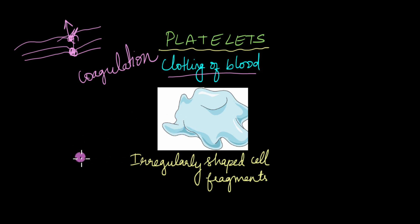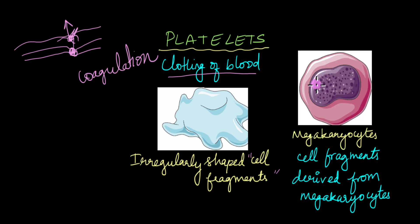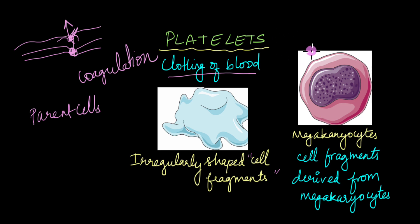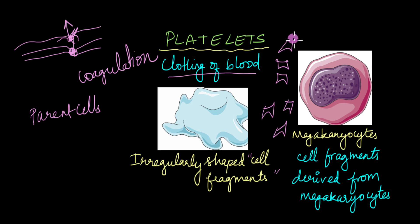Platelets are actually not cells in the traditional sense — they are cell fragments. There are cells known as megakaryocytes, which can be thought of as the parent cells for platelets. When these megakaryocytes mature, they start to break up into smaller, irregularly shaped pieces. These smaller pieces are what platelets are. So platelets are not technically cells; they are cell fragments derived from megakaryocytes.